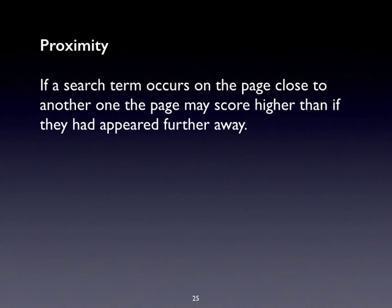Proximity is something search engines use to score pages. If someone searches for 'ice cream recipes' and the engine finds pages with those three words, a page that has 'ice', 'cream', and 'recipes' close together — in the same sentence or paragraph — is going to rank higher than a page where those words are just dotted about. Proximity is part of the score.